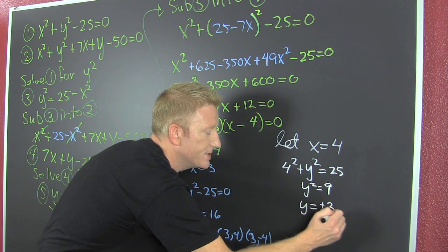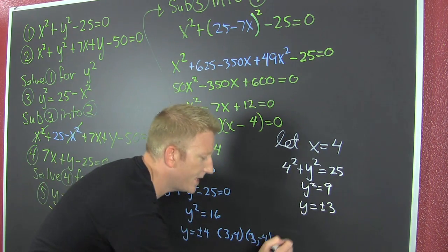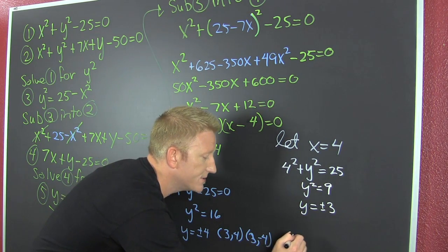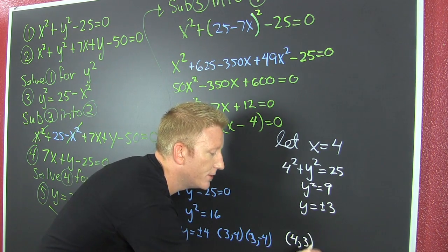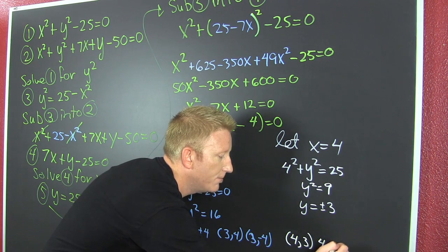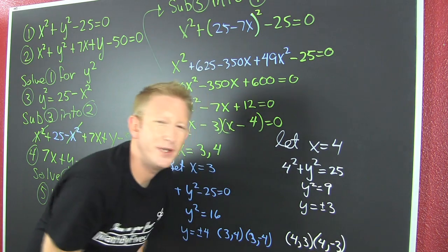So then y turns out to be plus and minus 3. So my two points down there are x is 4 and y is 3, also x is 4 and y is minus 3.